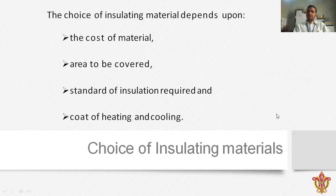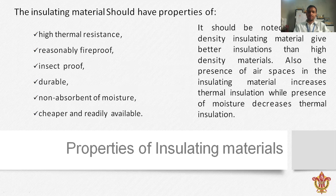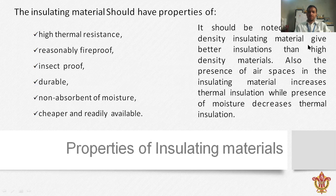To summarize, the choice of insulating material depends on: cost of material, area to be covered, standard of insulation required, and cost of heating and cooling. The properties of insulating material include: high thermal resistance, fireproof, insect-proof, durable, non-absorbent of moisture, and cheaper and readily available. Here we have covered thermal insulation, thermal insulating materials, and the properties of thermal insulating materials. Thank you.